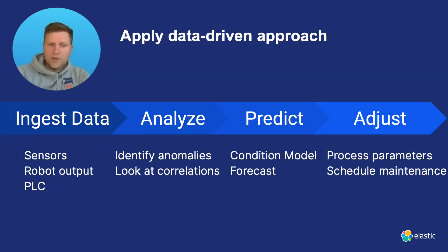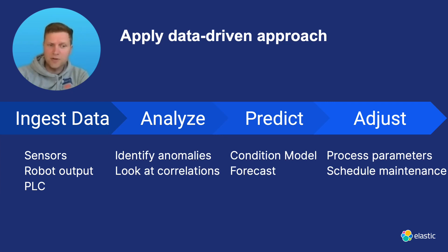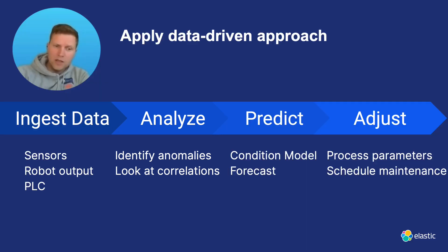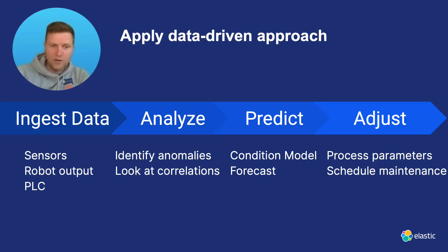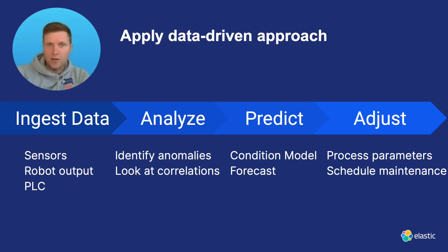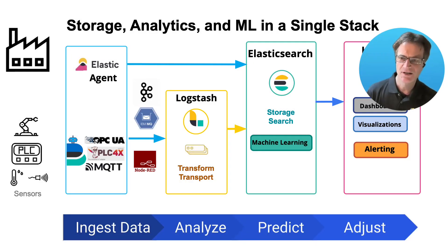At a high level we achieve this by applying a data-driven approach. We ingest operational sensor data into an analytics system like Elasticsearch, then use analytics and machine learning models to automatically monitor operations and extract insights about issues that can occur. Once you've identified the root cause, you can adjust your process parameters or initiate actions like maintenance or resetting the electronic device when required. So we mine real-time operational data for insights and actions that optimize the operation.